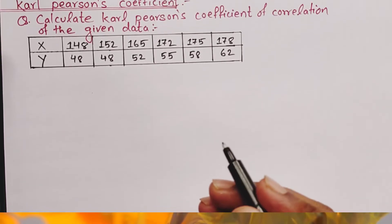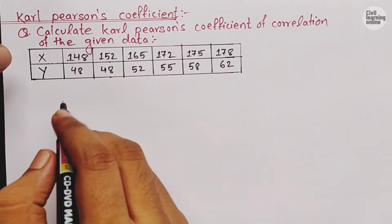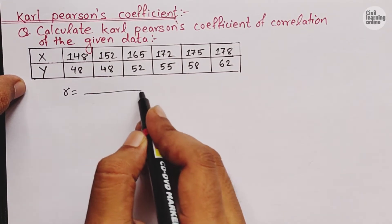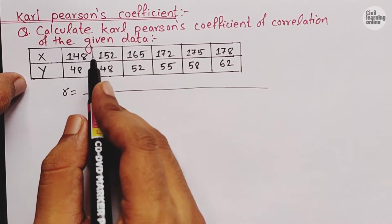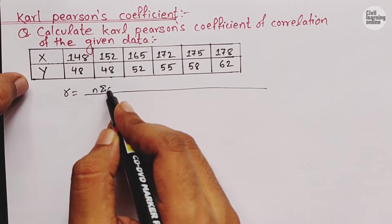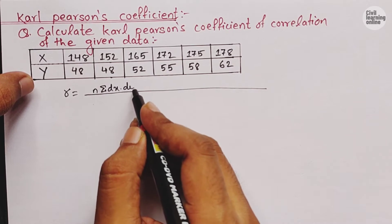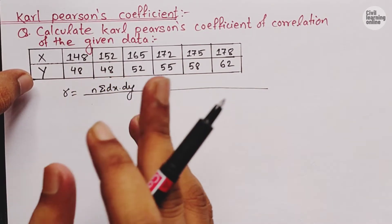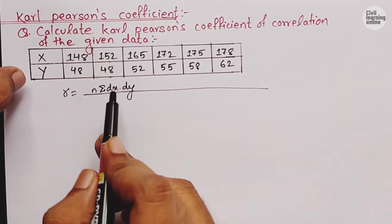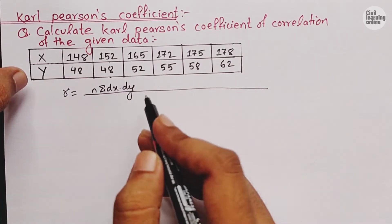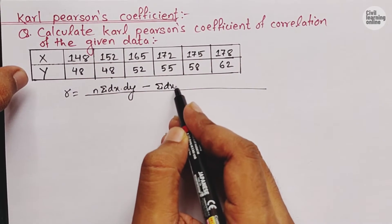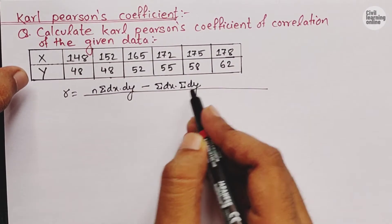Let's go through the formula. The formula for Karl Pearson's coefficient is: r equals n times summation dx·dy, minus summation dx times summation dy — all divided by a square root expression. In the previous formula we used summation xy, but here we are going to use summation dx and dy. I will discuss what dx and dy are while proceeding with the solution.